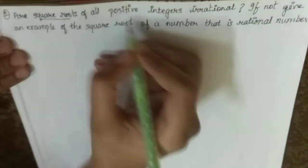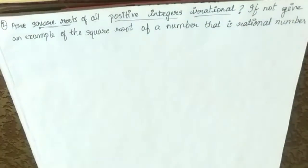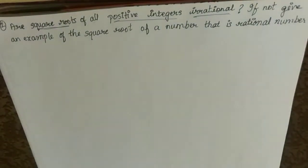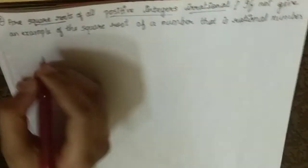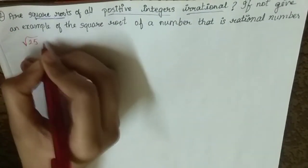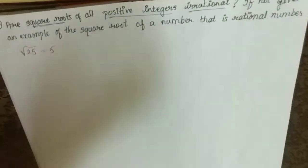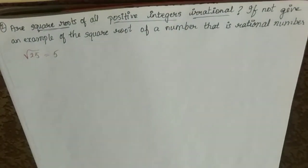First, are square roots of all positive integers irrational? Let me explain. If I have square root of 25, it is 5. This is square root, we know that. So basically, this is what square root is, we got to know.